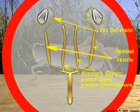Accessory gland secretions may prevent the mated female from mating again by forming a temporary plug or by transferring chemicals that suppress mating behavior.